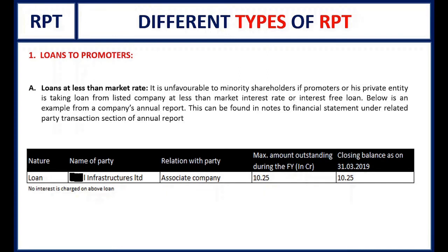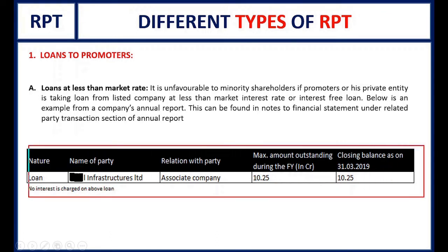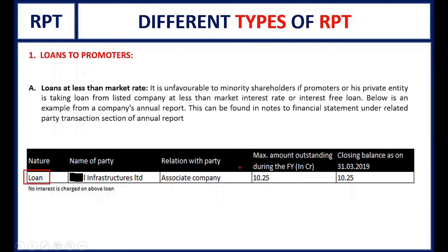If the listed company is giving a loan to a privately owned company at 1% or 2% interest, that is not favorable. For example, I have a company name written here but for obvious reasons I cannot show it. If you go to the annual report's related party transaction section, you will see this. The listed company has a 10.25 crore loan outstanding — but the most important thing to note is that no interest is charged on this loan. If you have a 10.25 crore loan, you would normally earn 4% or 5% interest, but here you receive nothing.